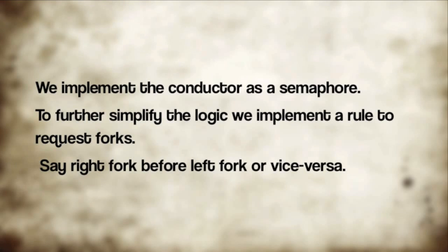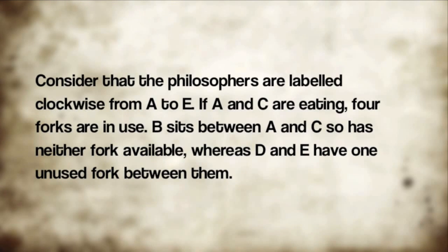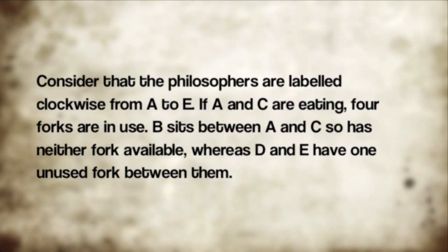To further simplify the logic, we implement a rule to request forks — say right fork before left fork or vice versa. Consider that the philosophers are labeled clockwise from A to E. If A and C are eating, four forks are in use. B sits between A and C, so has neither fork available, whereas D and E have one unused fork between them.